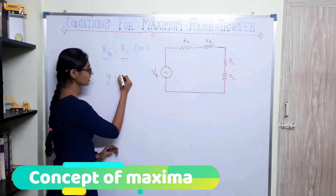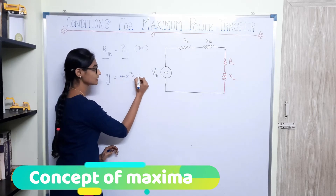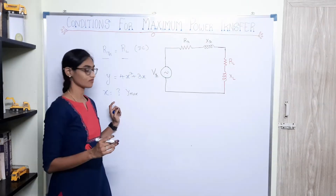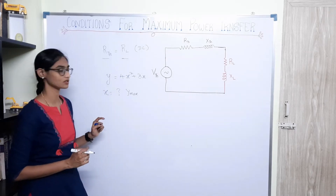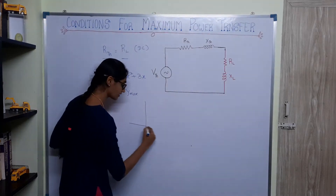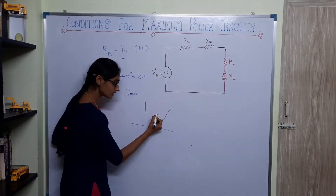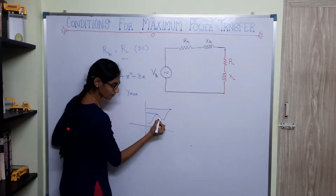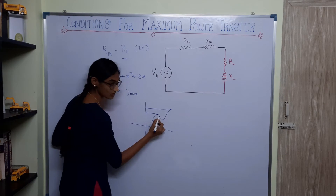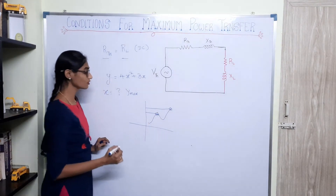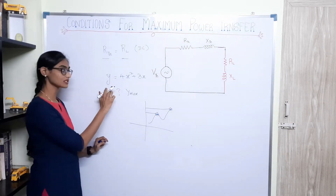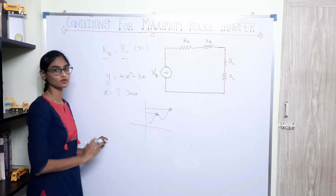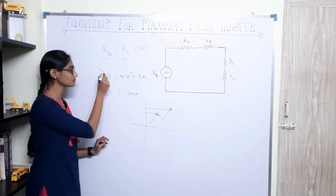When I have an equation like y = 4x² + 3x, I am trying to find the value of x for which y is maximum. When the maximum occurs, the slope of the curve will be 0. For example, at a peak point on the curve, the slope is 0 because the curve is parallel to the x-axis. So to find that, we find the derivative and equate it to 0 to find the value of x at which maximum occurs.